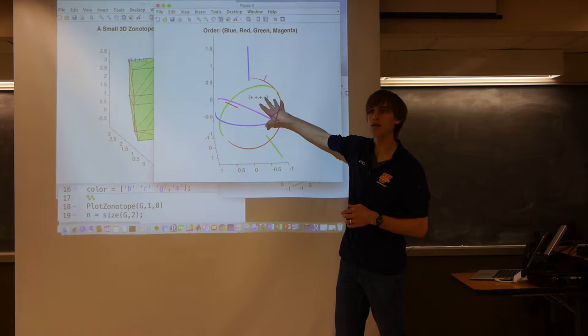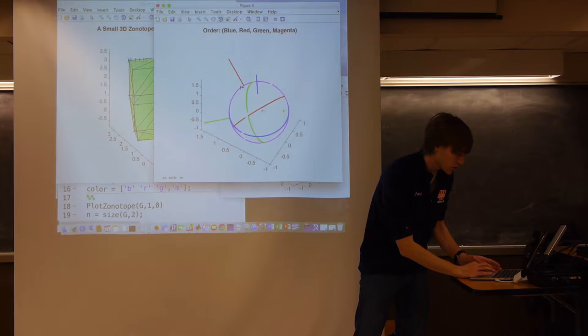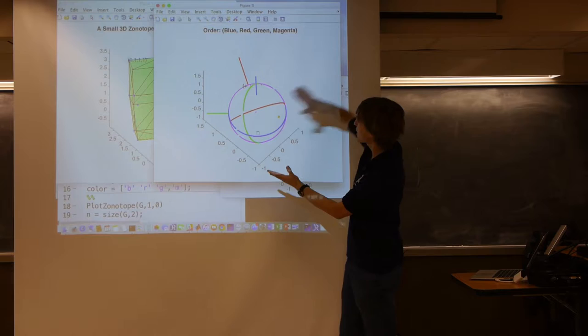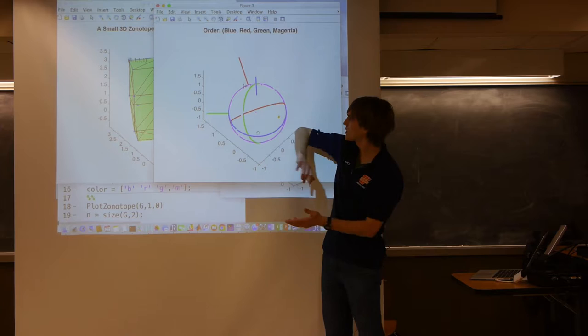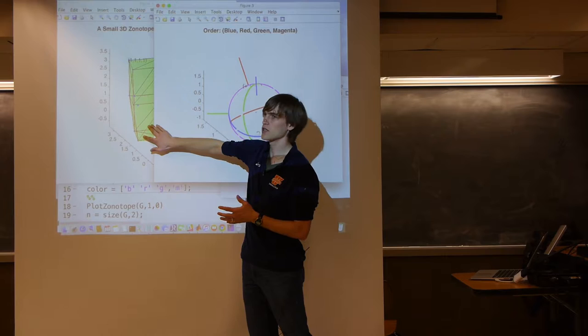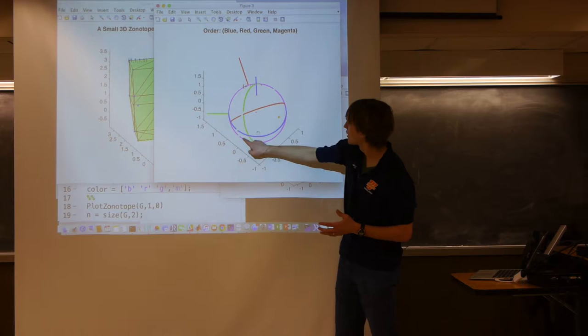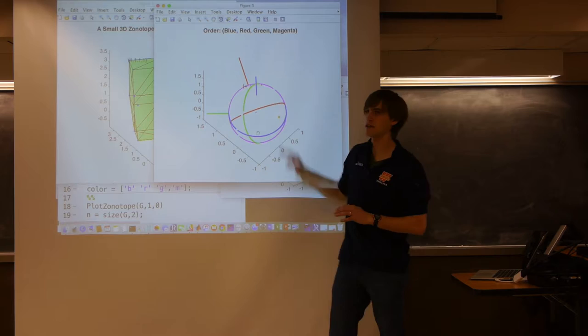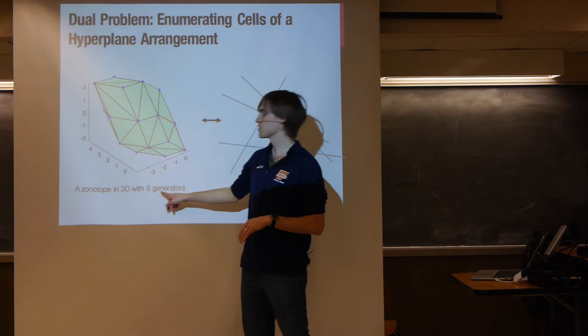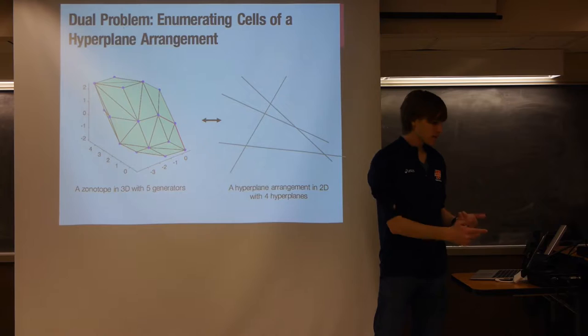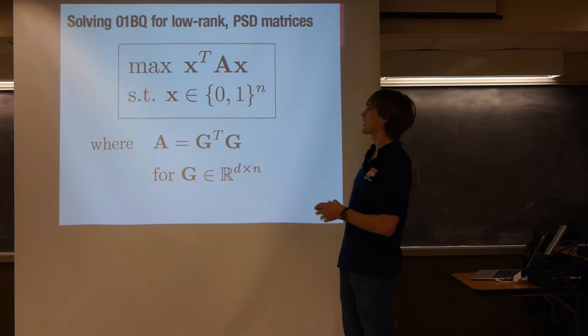You can also decrease the dimension of this problem by 1. Looking straight down into the magenta vector, I've essentially projected into a two-dimensional space. So a zonotope in 3D, enumerating its vertices, becomes equivalent to visiting cells in a 2D hyperplane arrangement — you fix one dimension and have a bunch of cells in two-space. A zonotope in three dimensions with five generators becomes equivalent to an arrangement in one dimension lower with one fewer hyperplane. These are dual problems.